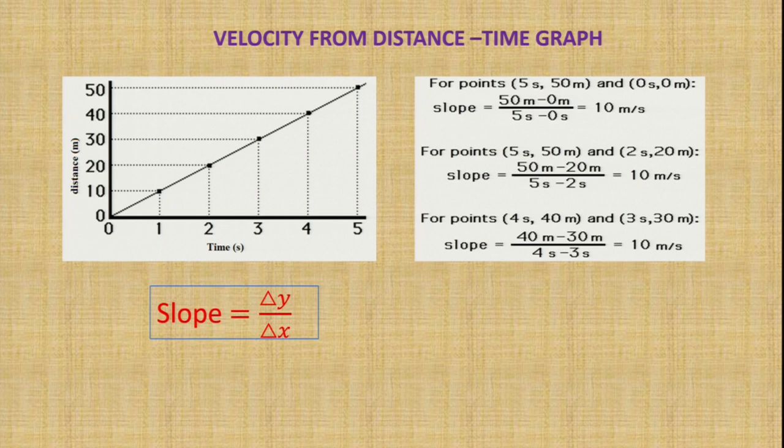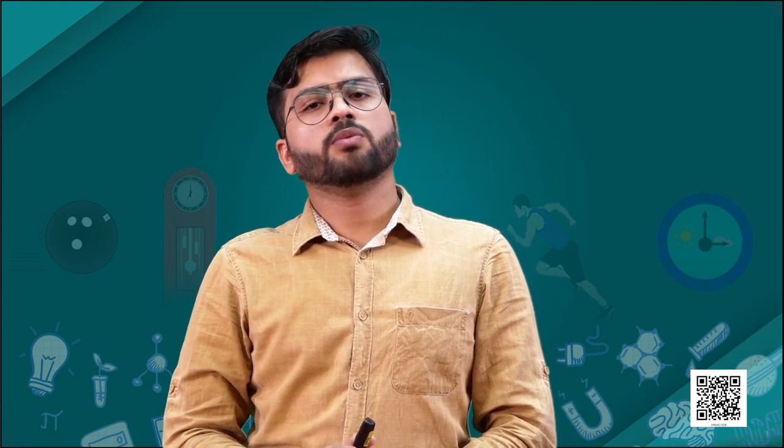From this graph, the constant slope value of 10 meter per second at every point suggests the graph is for an object executing uniform motion — because the velocity remains the same throughout. So from the distance-time or position-time graph, we can also calculate the velocity of an object.